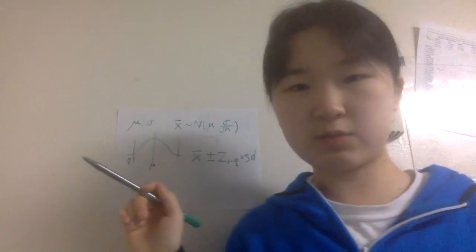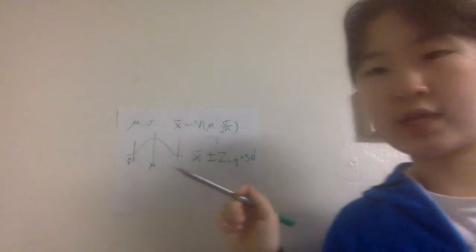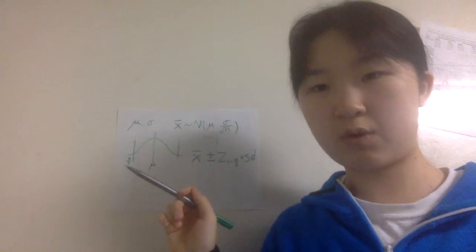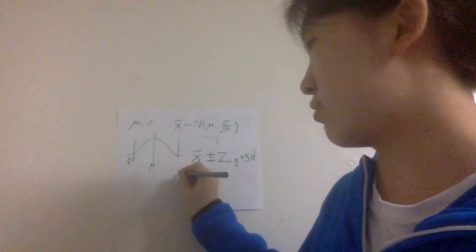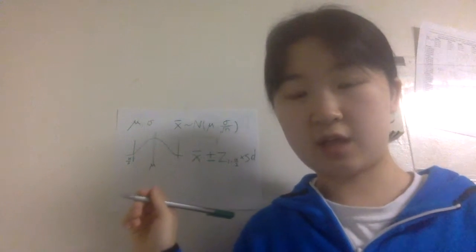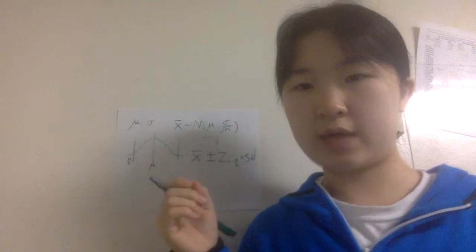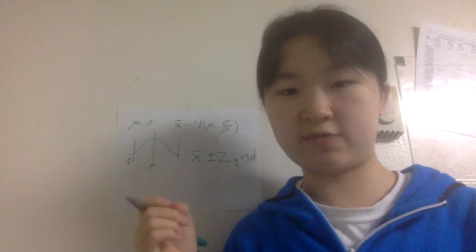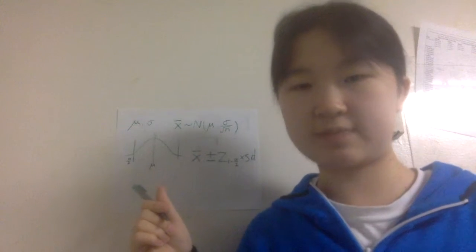Often we don't know what sigma is, so we can use the sample standard deviation s to estimate sigma. Here s is the standard deviation of all the data in your sample. As we know, s is an unbiased estimator for sigma, which is why we can replace sigma with s.